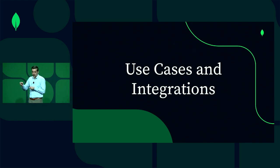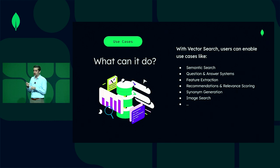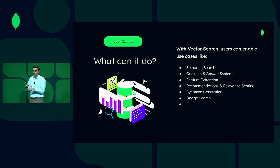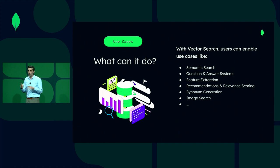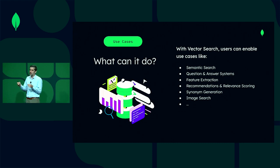Now I want to quickly cover a few use cases we're seeing out in the market. There are some classic use cases like semantic search — the ability to search for data based on meaning rather than textual search for keywords. There are use cases for question and answer systems, feature extraction when you dive into more machine learning type use cases, recommendations and relevance scoring, as well as synonym generation and image generation. What's really powerful is that almost any kind of data can be represented as a vector, and therefore you can do search over any kind of data.